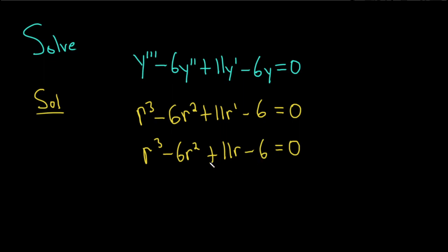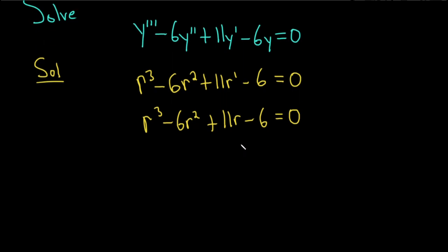So I am not seeing an immediate way to factor this in my mind, so I'm going to resort to something called the rational roots theorem. The rational roots theorem says that you look at the factors of the constant term divided by the factors of the leading coefficient.